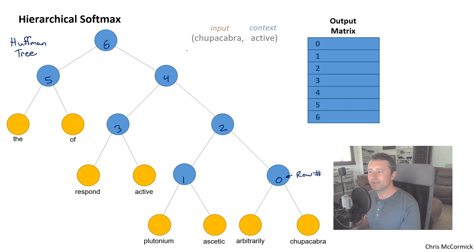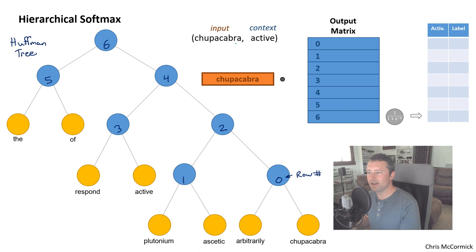Now let's say we've got the training pair chupacabra comma active. So we're using the skip gram model, and chupacabra is the word at the center of our context window. And active is the current context word that we're trying to learn. What we're going to do is we're going to train our model to tell us how to navigate this tree to get to the word active. So we start by looking up the input vector for chupacabra, which, by the way, if you're not familiar, chupacabra is an urban legend, kind of like Bigfoot or Loch Ness Monster. And we're going to take that word vector, and we're going to start at the root node, number six.